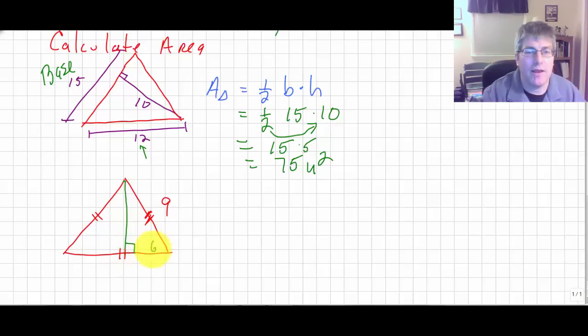Fortunately, this triangle is equilateral, so I know that all the angles are 60. So I'm using my properties of a 30, 60, 90, I can calculate the height. So the 9 is the 2x side. So the x side, I'm just going to call that 9 halves.